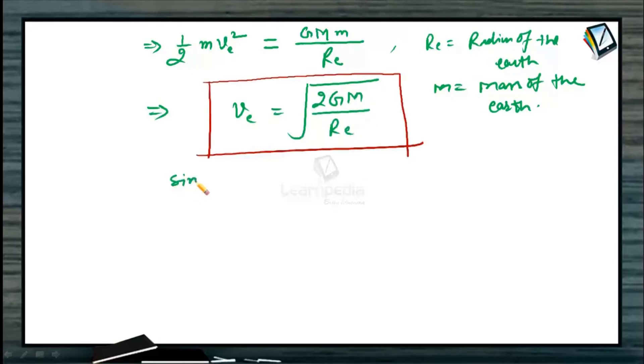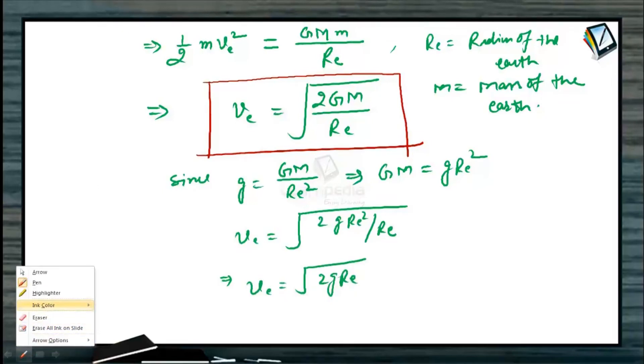Since we know that small g equals to capital GM by R_E squared, so in the above equation capital GM can be replaced by small g times R_E squared. So replacing, we will be getting V_E to be root over 2gR_E squared upon R_E, or V_E to be root over 2gR_E, which is the escape velocity for any body of any mass because this expression is independent of mass of the individual body.